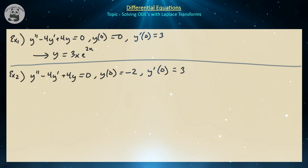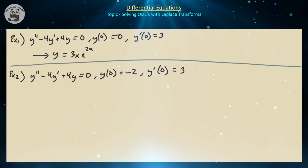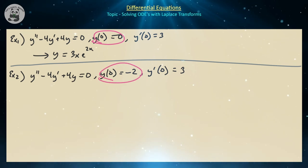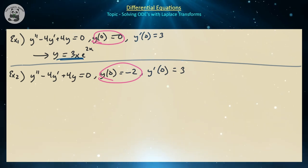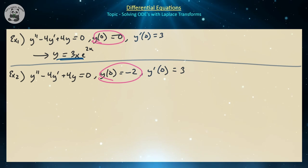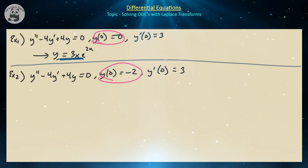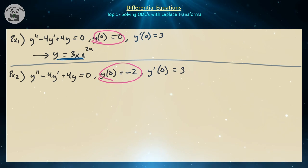The next example is a slight variation: same ODE, y double prime minus 4y prime plus 4y equals 0, but now the initial conditions are y of 0 equals negative 2 and y prime of 0 equals 3. The question is whether changing one initial condition just scales the solution or produces something qualitatively different. Let's use Laplace transforms and find out.